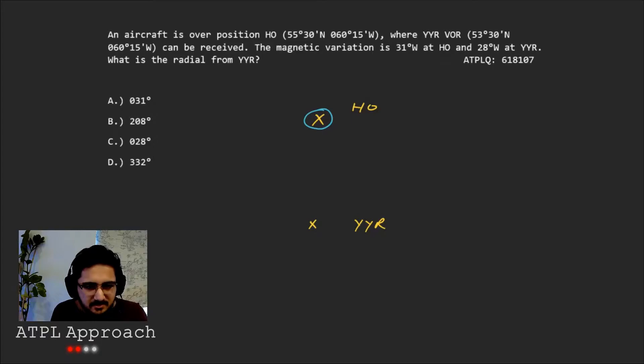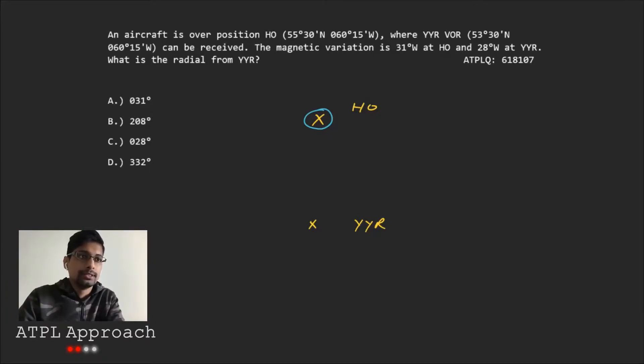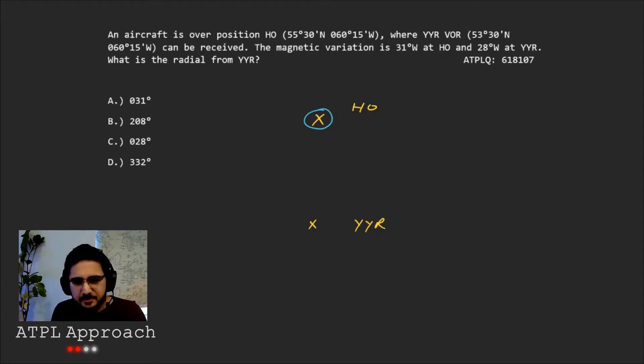So if we look at the answers, well, because the variation is quite big, it's fair enough. But if let's say there was no variation, do you know what radial we'd be on? Yeah. Zero, zero, zero. Yeah, exactly. So we're on a northerly one, right?